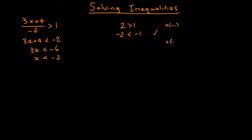And the same thing happens with any other negative number. So if instead we multiply by minus 3, on the left we get minus 6, on the right we get minus 3, and again we need to flip that sign to a less than to make that a true statement. So perhaps that helps you understand the logic behind this rule a little more.